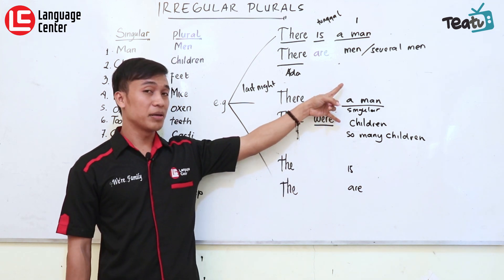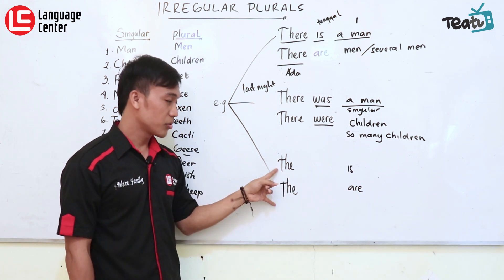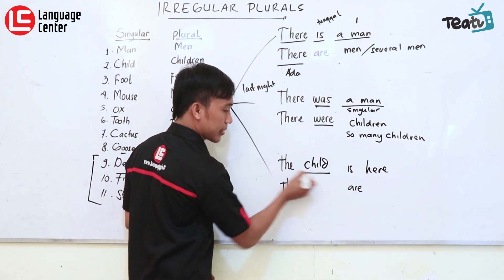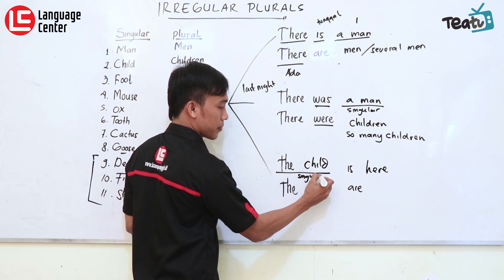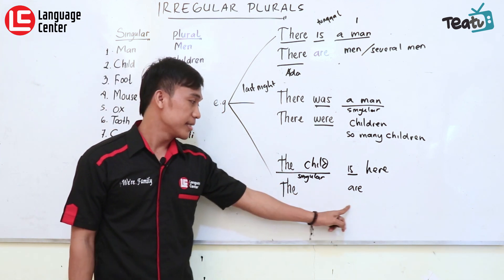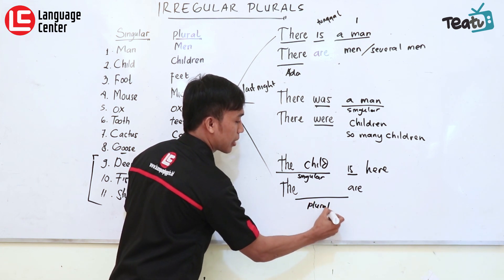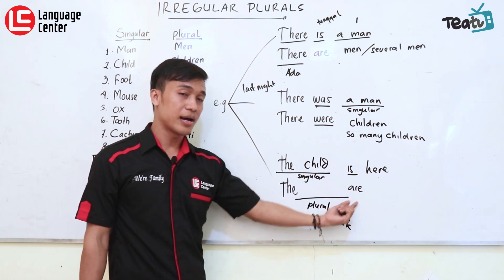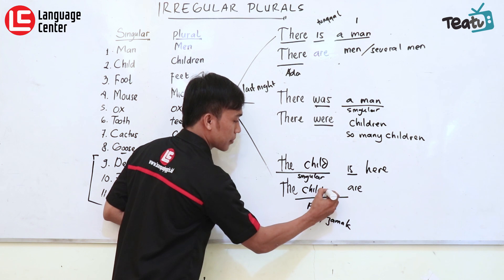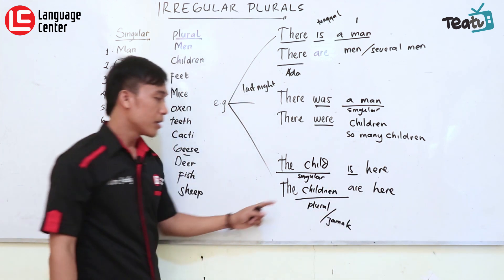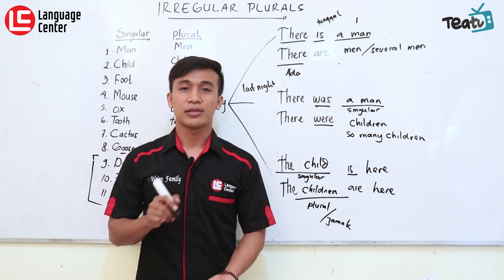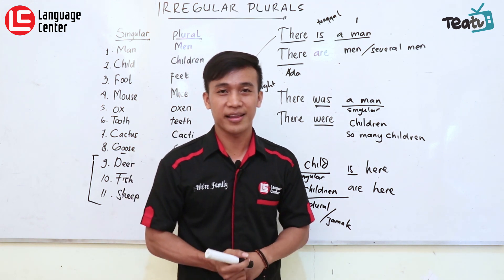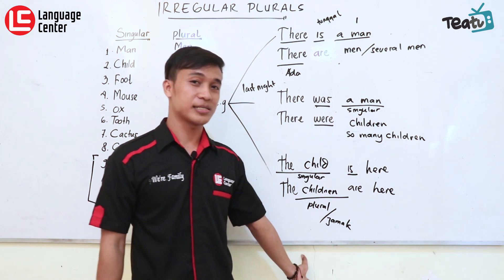Ini kalau posisi mereka berada di complement atau setelah verb. Bagaimana kalau menduduki posisi subject? Contohnya: 'The child is here' — karena subjectnya singular, pasangannya pakai 'is'. Sedangkan kalau menggunakan 'are', harus bentuk plural atau jamak. Kalau menggunakan 'child' bentuk singular, gunakan 'is'. Kalau menggunakan jamak, gunakan 'are'. Contohnya: 'The children are here'. Ingat, tanpa ada S pun, 'children' sudah bermakna lebih dari satu. Itulah sebelas kata yang bisa saya bagi — bagaimana merubah noun tanpa ada trik, tapi teman-teman dituntut untuk menghafalnya.